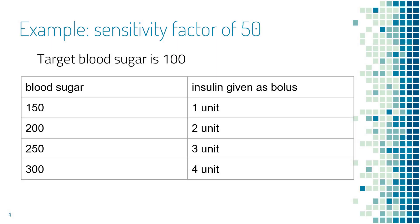Here is an example of a sensitivity factor of 50. Let's say if we set the target blood sugar at 100: if blood sugar is 150 you should take one unit of insulin, if your blood sugar is 200 you should take two units, if it is 250 you should take three units, if it's 300 you should take four units, and so forth. For every 50 points of blood sugar above the target you should take an additional one unit of insulin. That's what a sensitivity factor of 50 means.